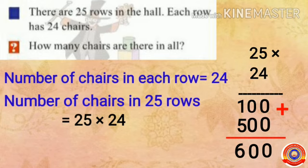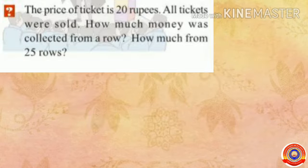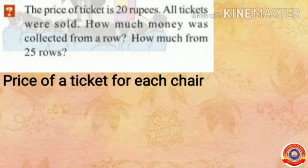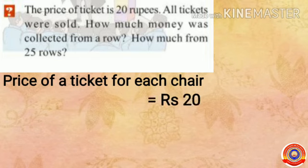How many chairs are there in all? 600 chairs. Next question: the price of a ticket is 20 rupees and all tickets were sold. How much money was collected from a row? The ticket rate is fixed on each chair. The price of each ticket is 20 rupees.